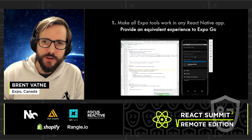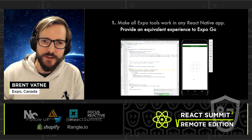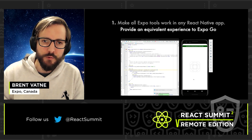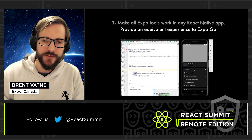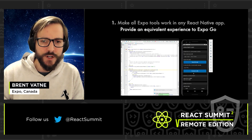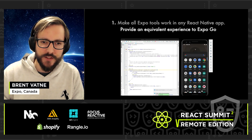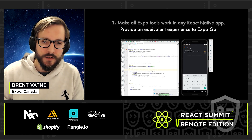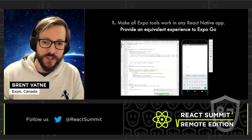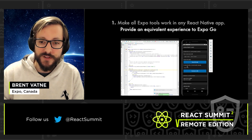The other missing piece is an equivalent to Expo Go. We've been building something we call Expo Development Client — it's a React Native library that gives you the same experience as Expo Go but with your own custom runtime. It's minimally opinionated to support the broadest set of use cases. When you create a debug build of your app, you get the development client experience, and when you create a release build, all of the development client code is stripped out. You can build the development client once and focus on the JavaScript side of your app, then return to it when you want to write or install new native code.